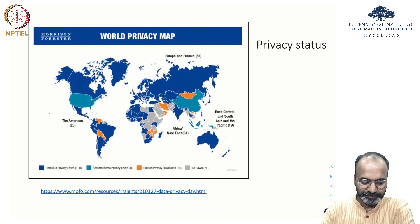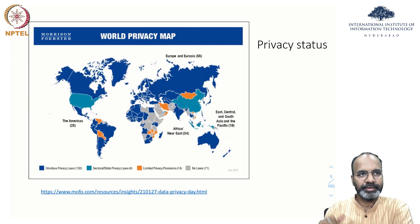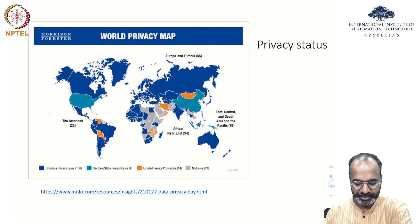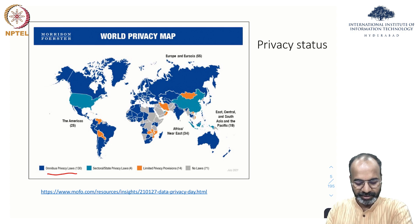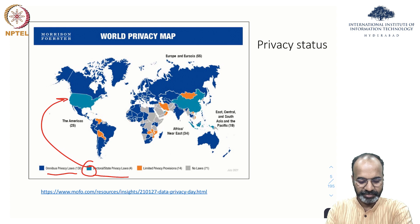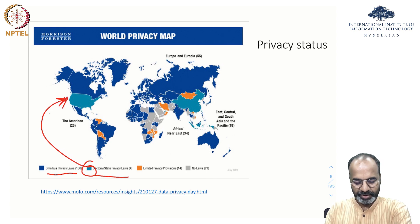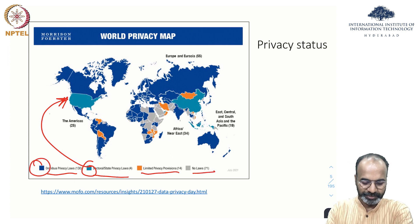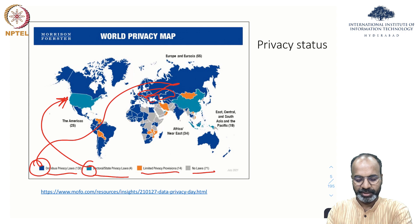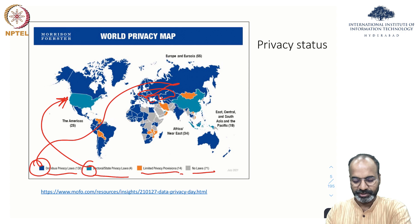This slide and image may also be connected to the privacy laws we discussed last time, because it actually talks about omnibus privacy laws and sectoral state privacy laws. Sectoral state privacy laws end up being in the US; omnibus privacy laws, limited privacy provisions, and no privacy laws are also shown. Omnibus privacy laws include Europe and the European Union.